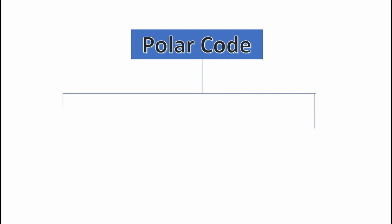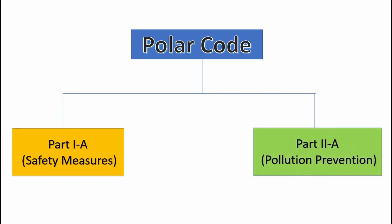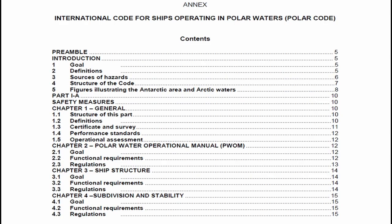In this video I will be covering only chapters 1, 2, 3, 4, 11 and 12. These are the chapters which mostly contain the general topics of Polar Code and mostly surveyors ask questions related to these topics.